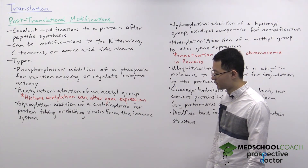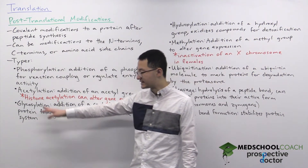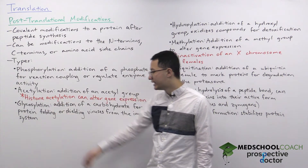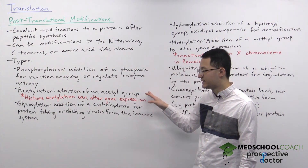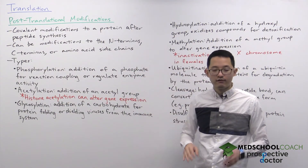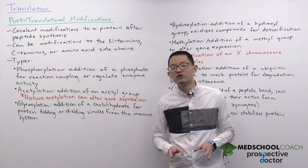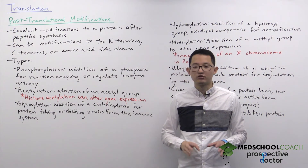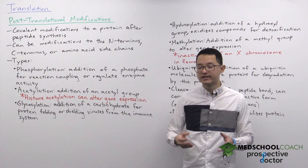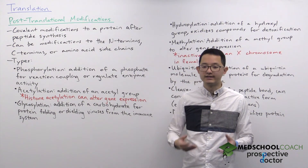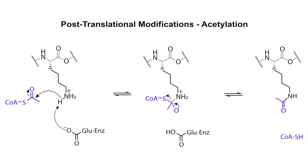Our second type of post-translational modification is acetylation, which involves the addition of an acetyl group. For the MCAT you do need to know what an acetyl group looks like — there is an example shown on the diagram here. The diagram shows how the side chain of amino acids is being acetylated through the addition of an acetyl group.